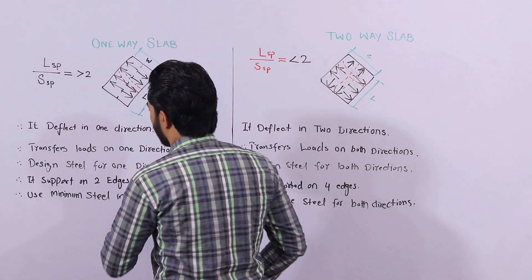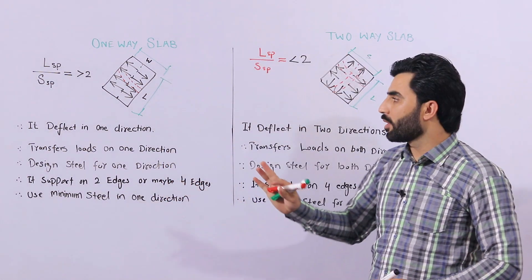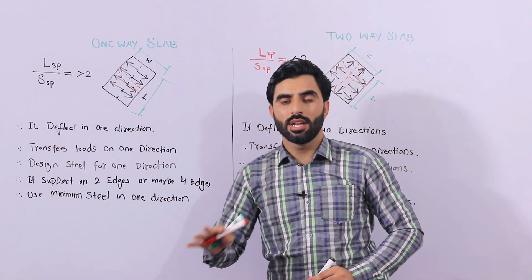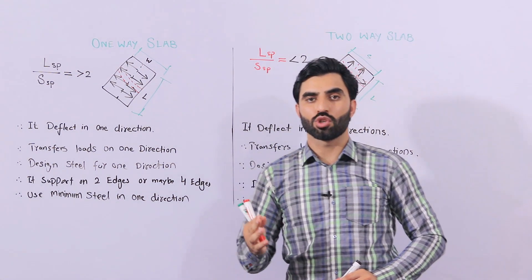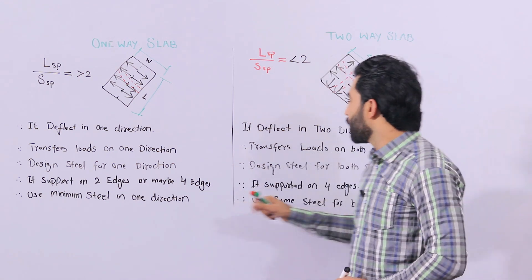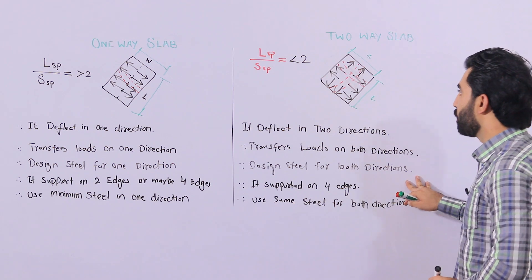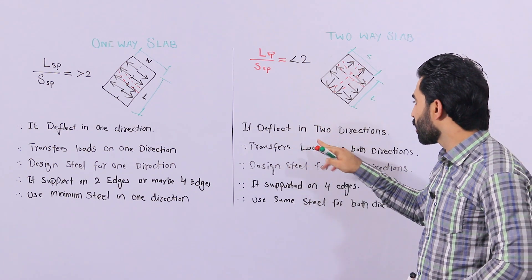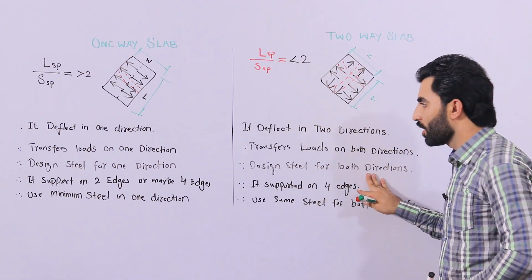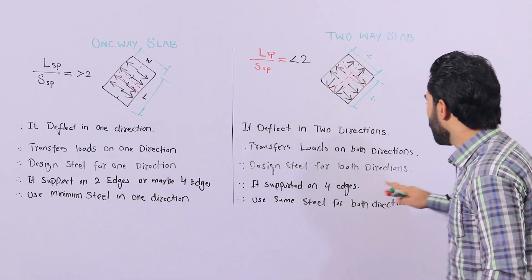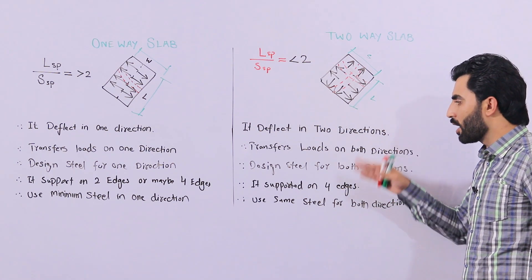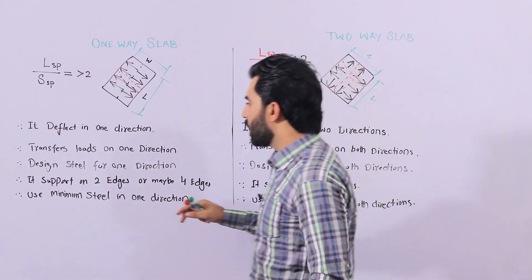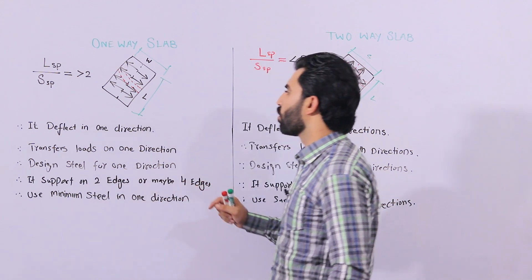In one-way slab, we design the steel for one direction, because it deflects on one direction. So we design main bars and distribution bars — the main bars' diameter should be maximum compared to distribution bars. But in two-way slab, we design the steel for both directions, since on both sides we have chances of deflection and bending moment. Therefore we design the steel reinforcement for both directions — main bars for both directions.